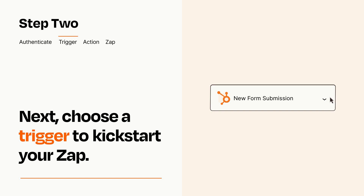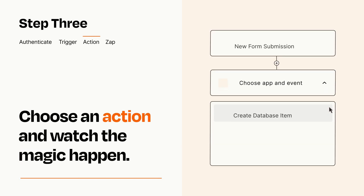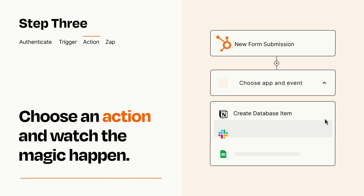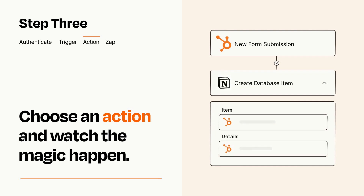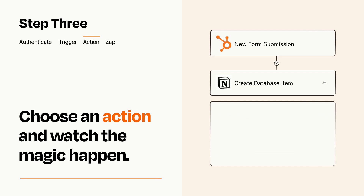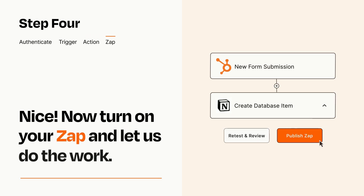This last part is where the magic happens. Choose the action you want to happen in your target app. You'll see a bunch of fields where you can specify the details of your Zap. You can type free form text or pull data in from your trigger step as needed.